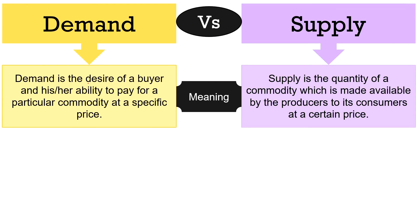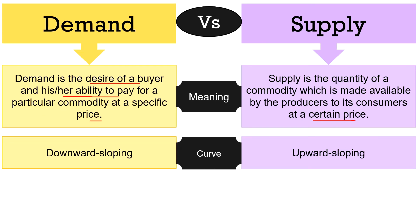Moving on to the differences between demand and supply. In terms of meaning, demand refers to the desire of the buyer and his or her ability to pay for a particular commodity at a specific price in a given period of time, whereas supply refers to the quantity of a commodity which producers are able and willing to sell to customers at a certain price during a given period of time. The demand curve is downward sloping from left to right, indicating a negative slope, while the supply curve is upward sloping from left to right, indicating a positive slope.